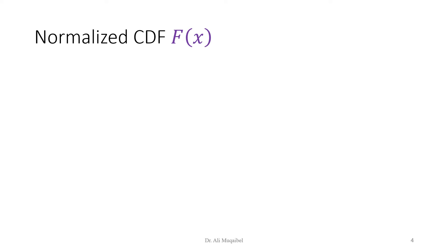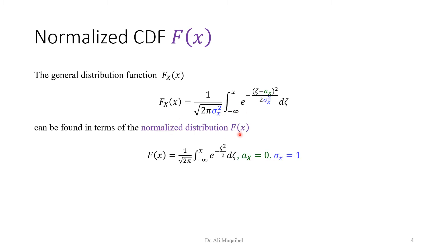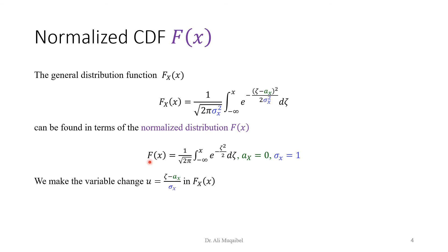Let's define the normalized CDF, which solves this problem. Instead of finding the general distribution function F_X(x) for any Gaussian with any σ_X, we use the normalized distribution — the standard normal — where the mean a_X equals 0 and the standard deviation σ_X equals 1. The notation F with subscript X represents the general distribution, while without the subscript X it denotes the normalized CDF.